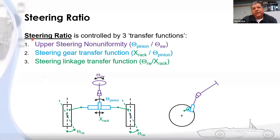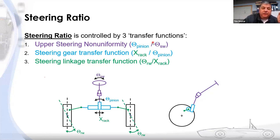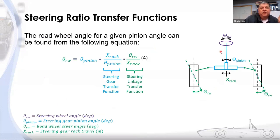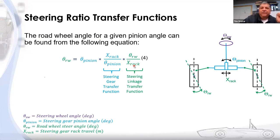The steering ratio is controlled by three transfer functions. The first is the upper steering non-uniformity — the transfer function between the steering gear pinion and the steering wheel. The second is the steering gear transfer function: how much rack displacement do we have for a given pinion angle. The third is what we call the steering linkage transfer function: how much road wheel steer angle do we get for a given rack displacement. Mathematically we can combine these to find road wheel angle for a given pinion angle.